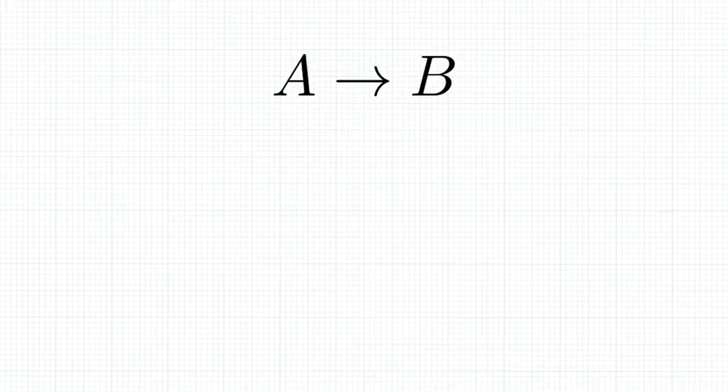Let's say we have two statements, A and B, that can be either true or false. And let's say if A is true, then B is also true. In other words, A always leads to B.